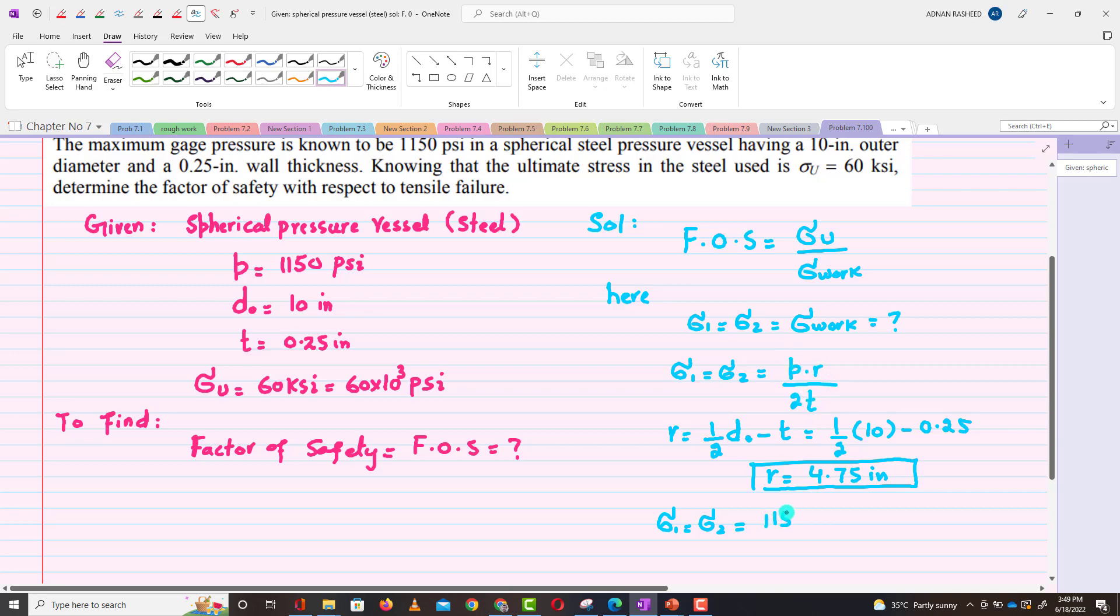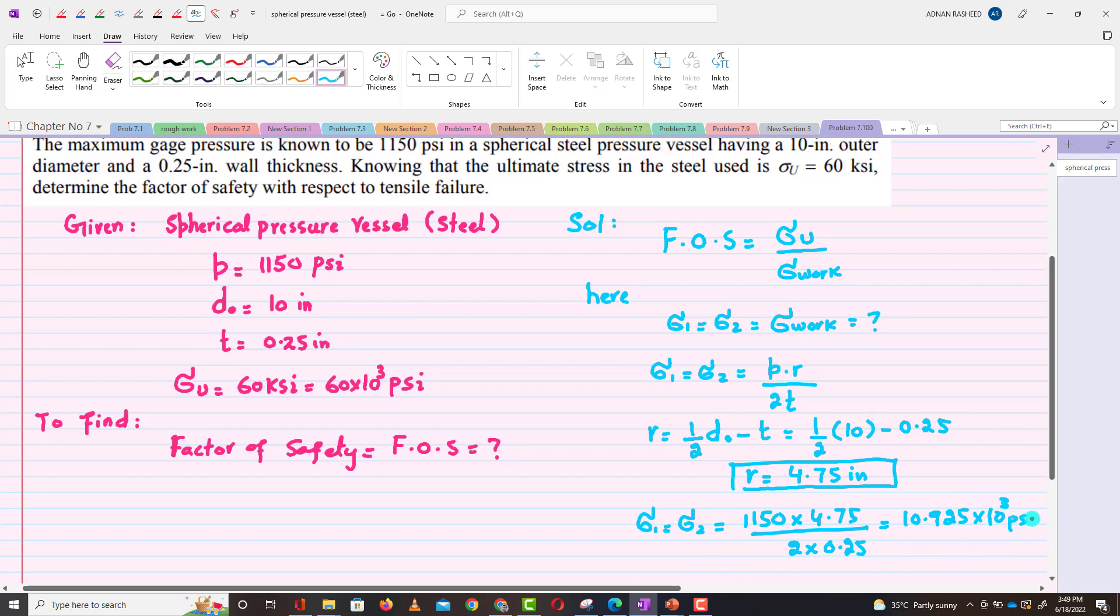4.75 inches divided by 2 × thickness, which is 0.25, which will give you 10.925 × 10³ psi.